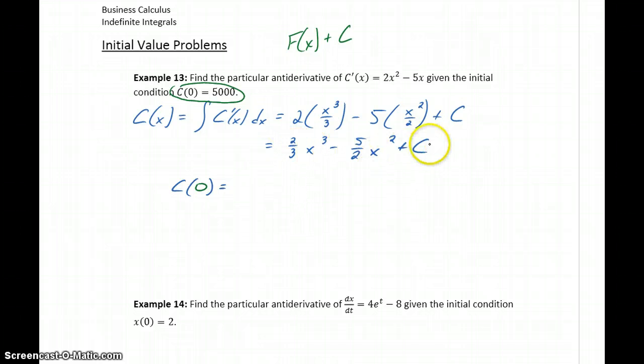So what we're going to do is take this general antiderivative we have, evaluate it at 0, and set that result equal to 5000.